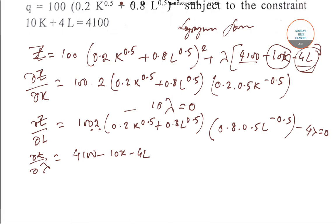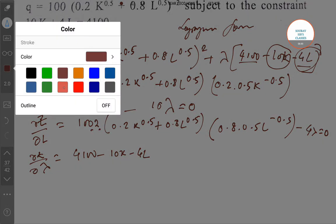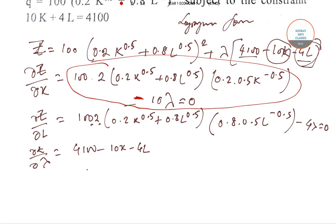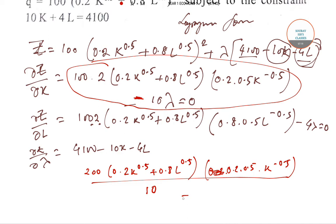We have the equations just like the previous question. Equate these two by finding lambda - the whole thing divided by 10 here, and the whole thing divided by 4 there. So 200(0.2K^0.5 + 0.8L^0.5)(0.1)K^(-0.5) divided by 10...